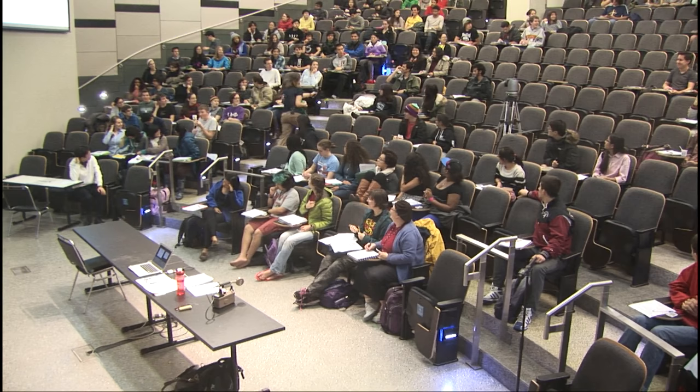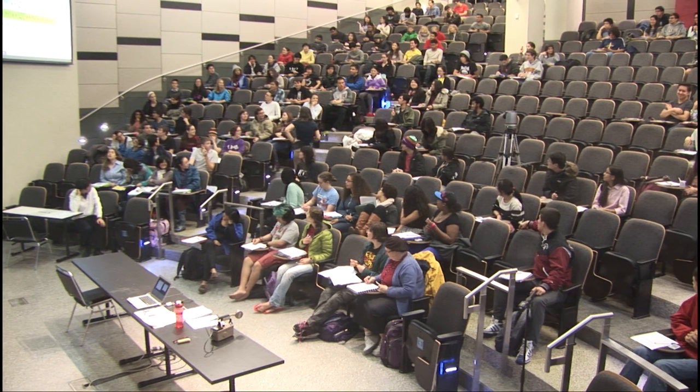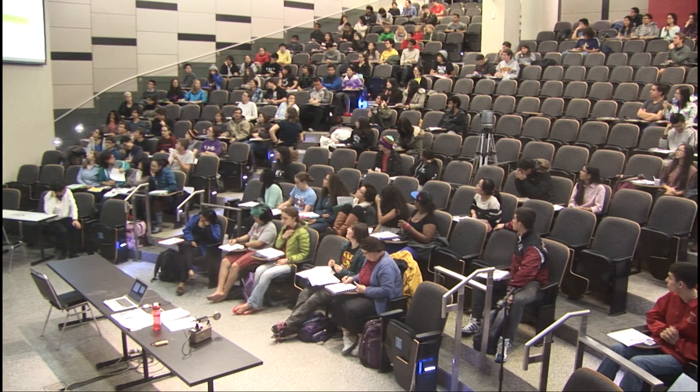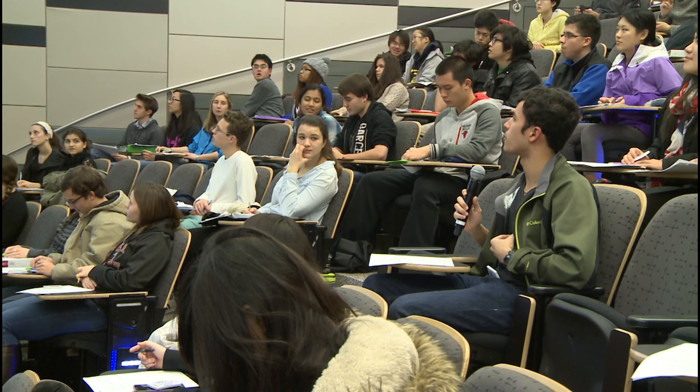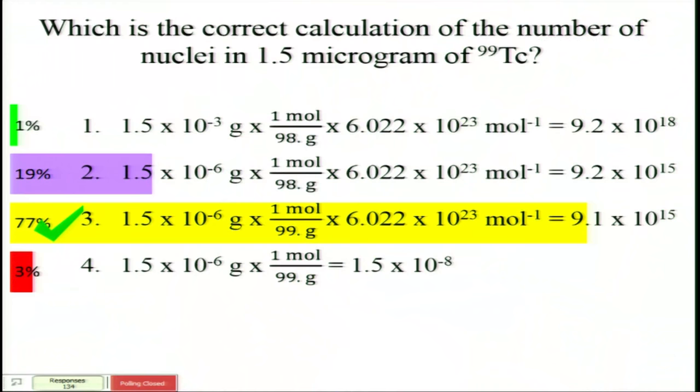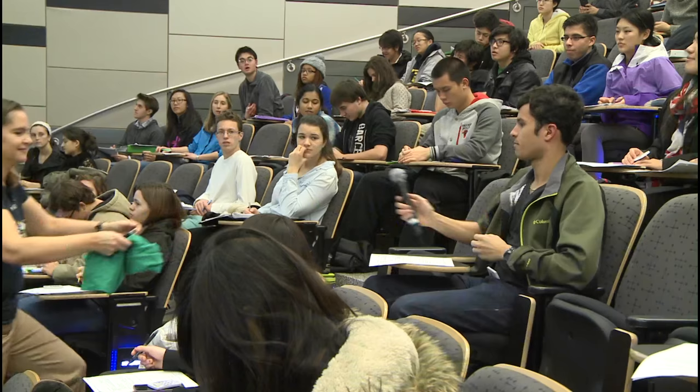Answers one and two have the wrong molar mass of technetium, and answer four does not multiply by Avogadro's number — so that gives you the number of moles rather than the number of particles.